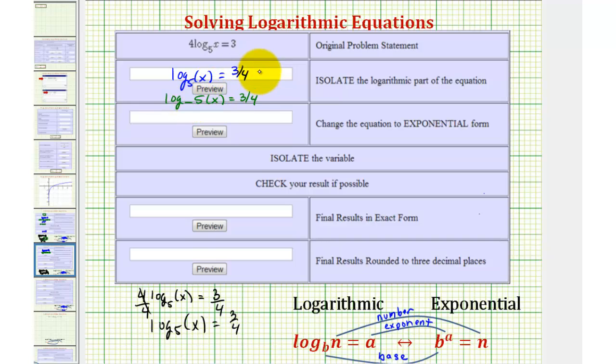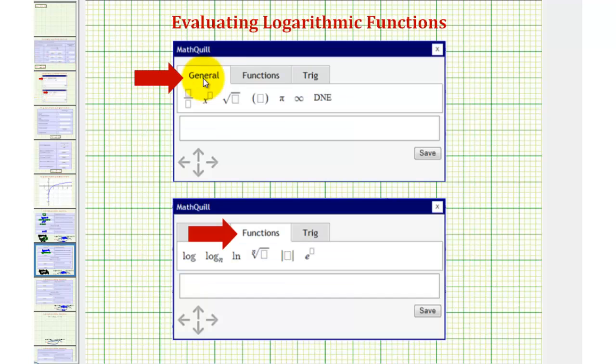The other option is to click in the answer cell, click on the small yellow arrow that appears on the right, which brings up this math palette.